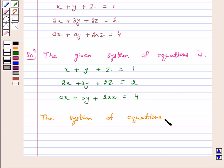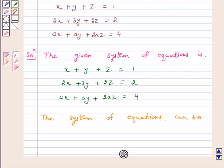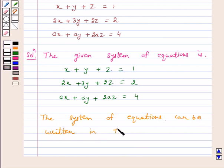can be written in the form AX is equal to B where